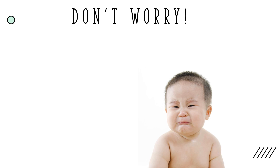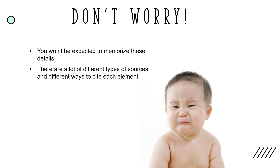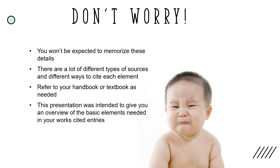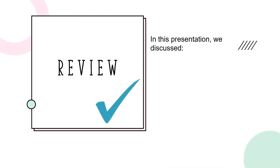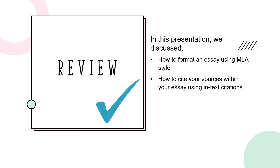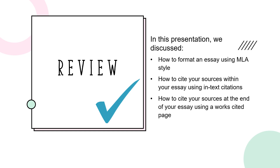I know that this is a lot of information to take in, but don't worry — you won't be expected to memorize all these details. There are a lot of different types of sources and different ways to cite each element. When creating your citations, you should always refer back to your handbook or textbook as needed. The purpose of discussing all of these details was simply to give you an overview of the basic elements needed in your Works Cited entries. In this presentation, we discussed how to format an essay using MLA style, how to cite your sources within your essay using in-text citations, and how to cite your sources at the end of your essay using a Works Cited page.